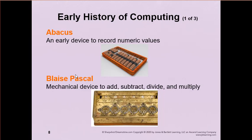Blaise Pascal was a well-known mathematician — there was a programming language named after him, Pascal. He developed a device that had wheels that would turn, controlling numbers that would appear in little windows above. By turning the wheels, it would be like adding — if you turned the rightmost wheel 10 times, it would make the next wheel turn once, giving you a 1 and a 0. And if that kept going, it would move the next digit up. So you had this daisy chain of wheels turning at different speeds that allowed mathematical operations, albeit slowly.